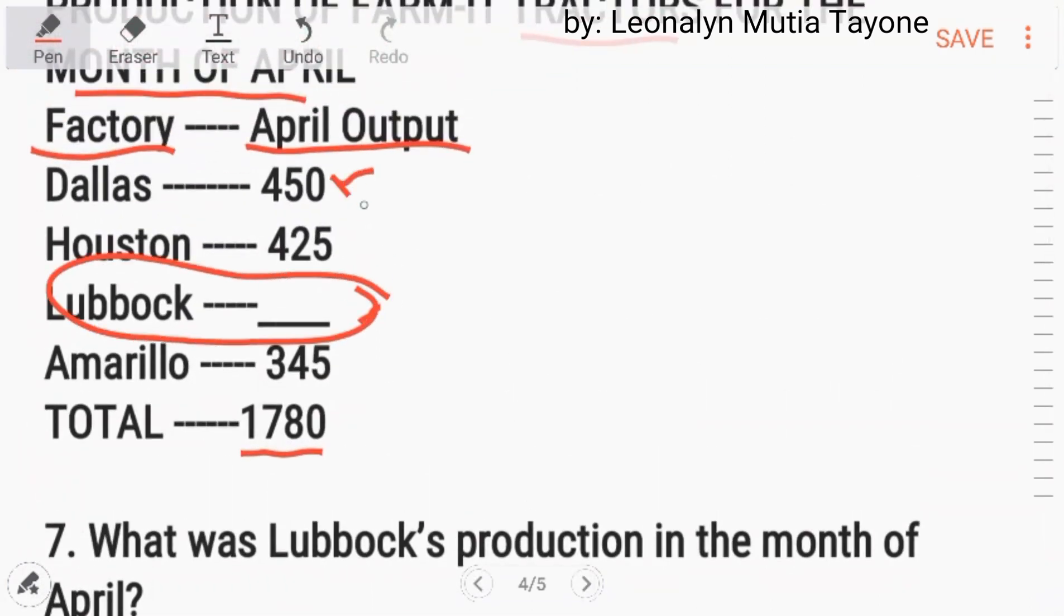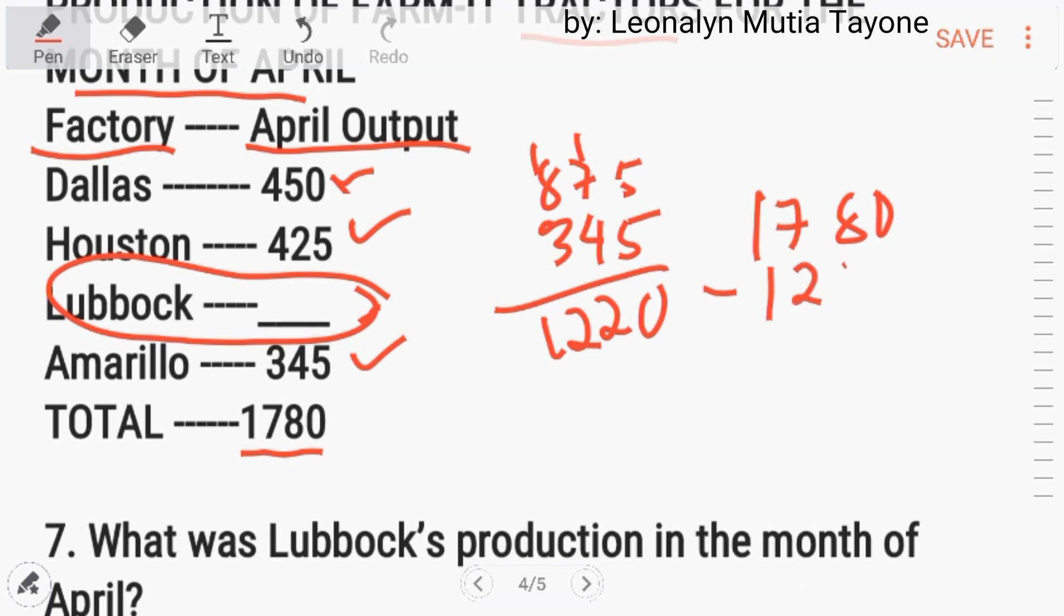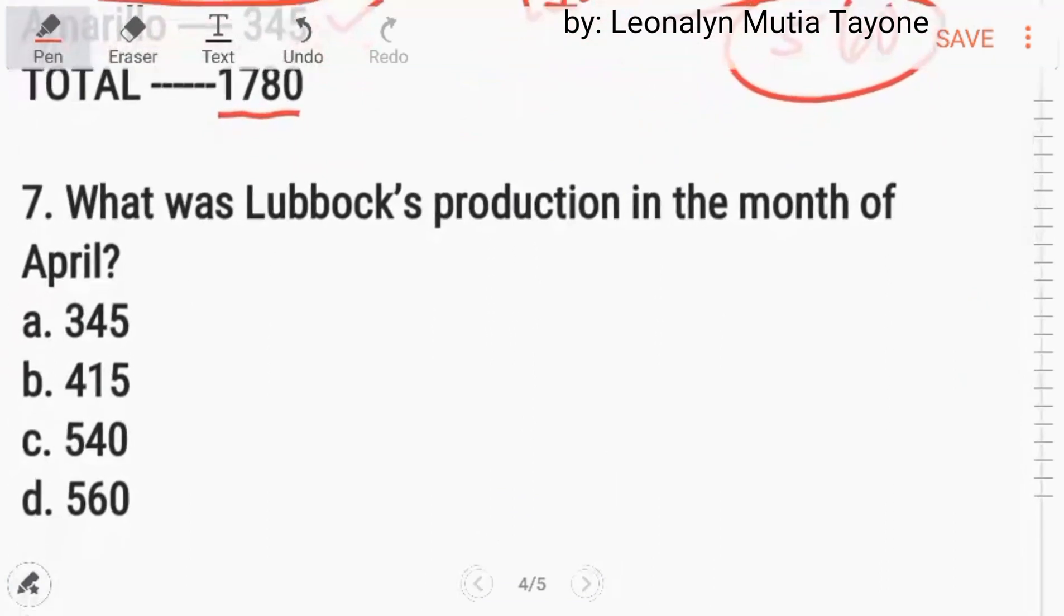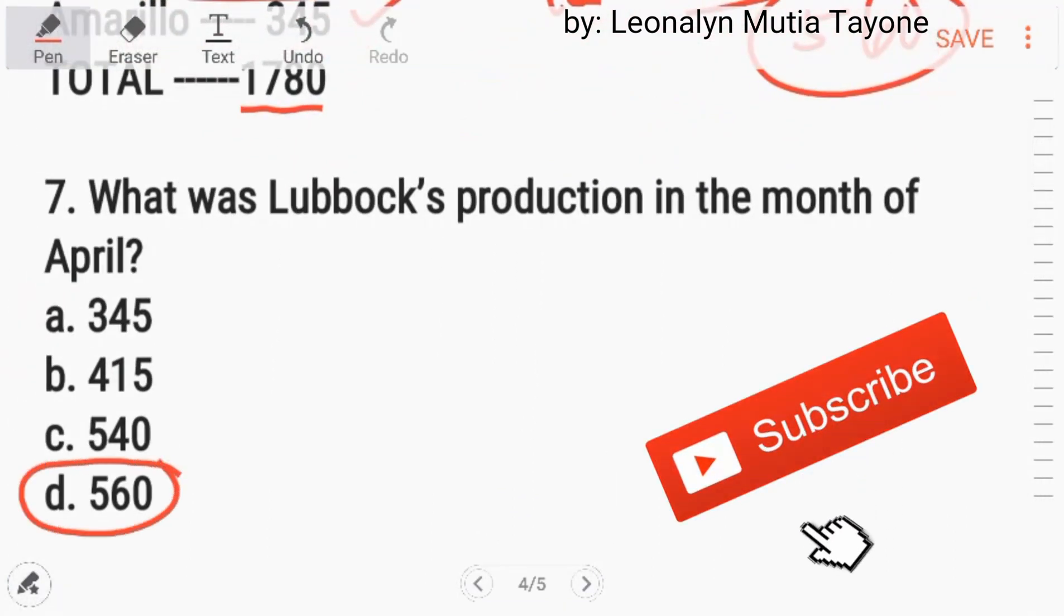So, ang gagawin natin, i-add natin ito. I-add natin yan. This is 875 plus 345. So, i-add natin yan. So, 1,220. Total minus 1,220. So, the answer is 560. So, bali 560 yan. 560, letter D.